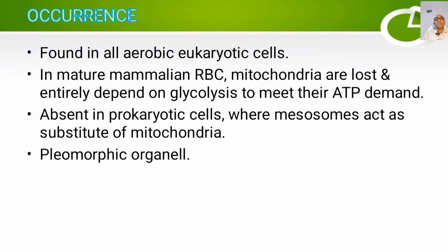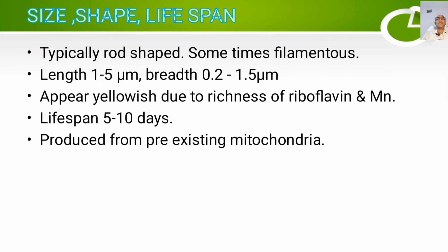Another important thing is that mitochondria are pleomorphic organelles, meaning they keep on changing their structure in various developmental stages. Regarding size, shape, and lifespan: mitochondria are generally rod-shaped but sometimes can be filamentous. Their length is around 1 to 5 micrometers and breadth is around 0.2 to 1.5 micrometers. They appear yellowish due to richness in riboflavin and manganese. Their lifespan is 5 to 10 days, and they are produced from pre-existing mitochondria.